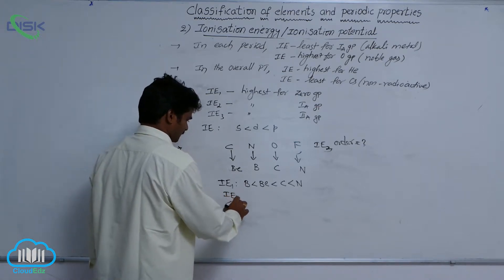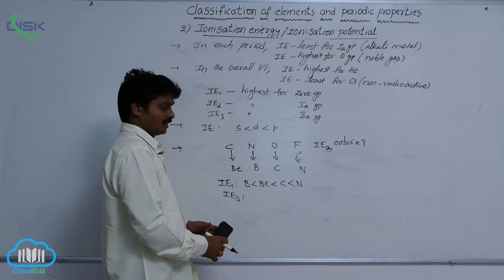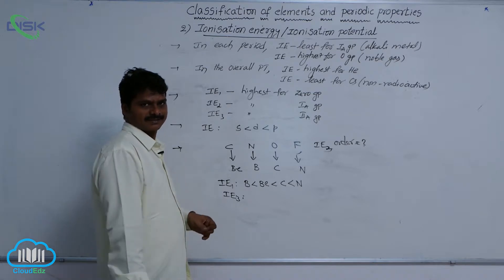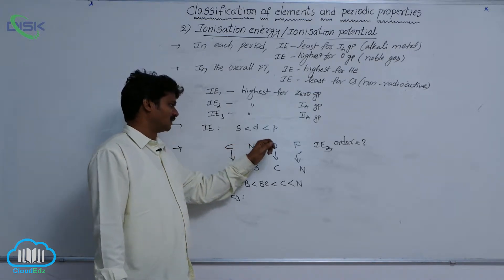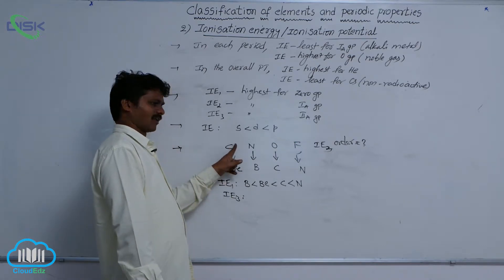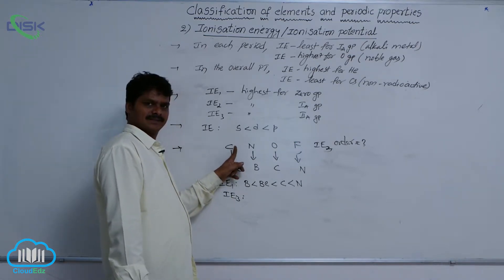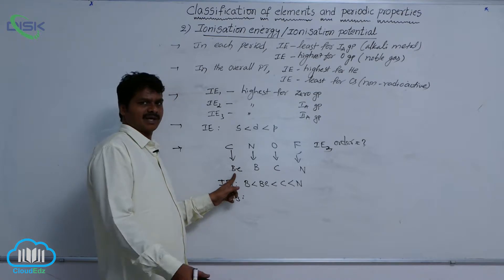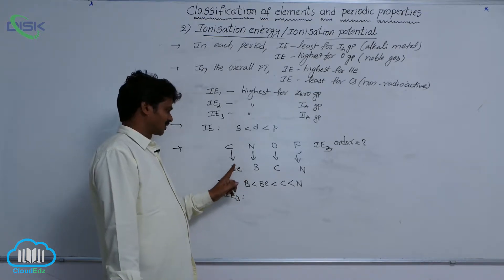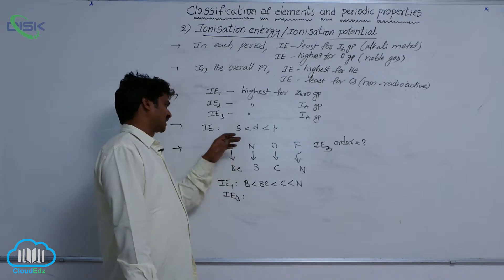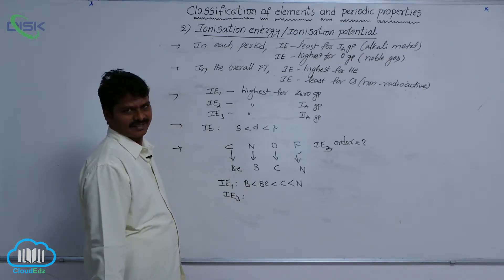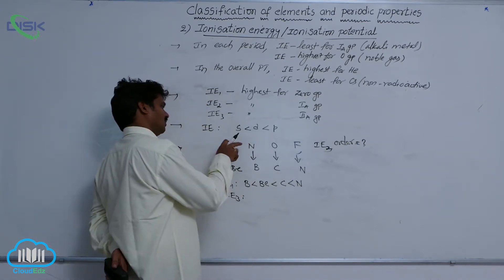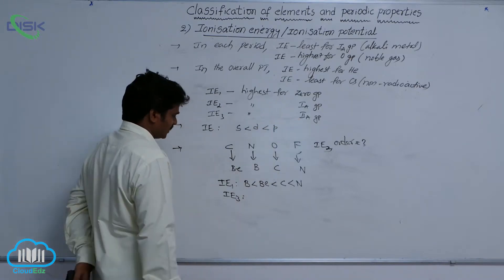The IE3 order of the given elements — removal of three electrons from these species gives C³⁺. You know C³⁺ and Be⁺ contain the same number of electrons — three electrons each. That is why the IE1 order of these elements equals the IE3 order of the respective elements.